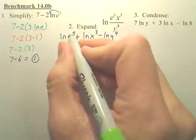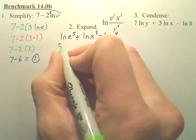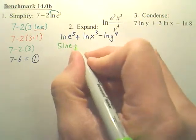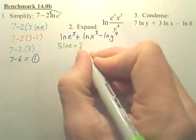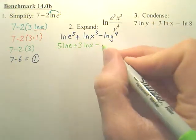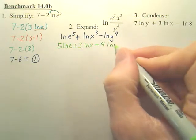Powers need to be put in front. So this power jumps in front, and I got 5 ln e. Plus, this 3 jumps in front, I got 3 ln x. Minus, the 4 jumps in front, 4 ln y.